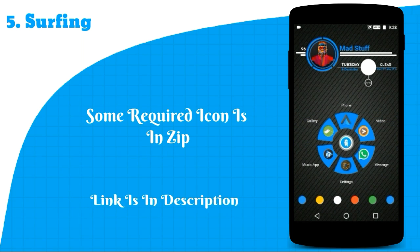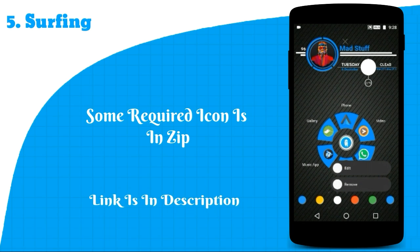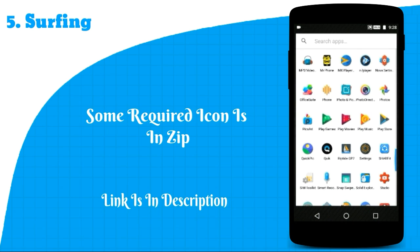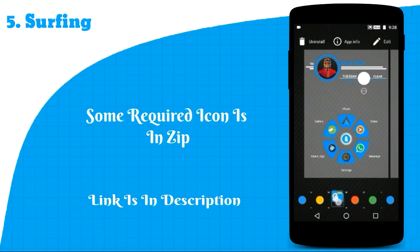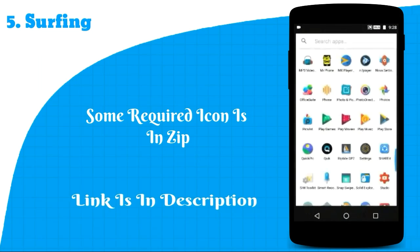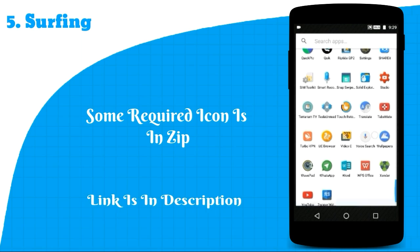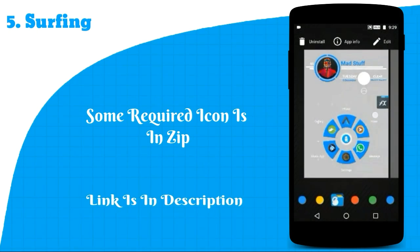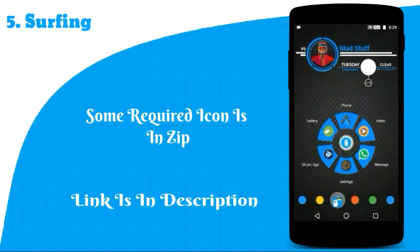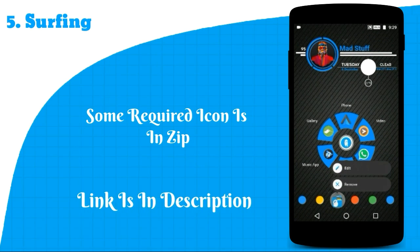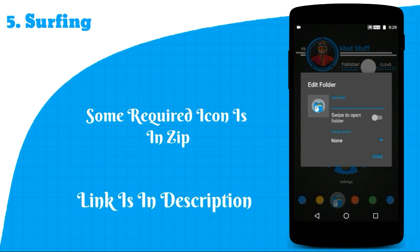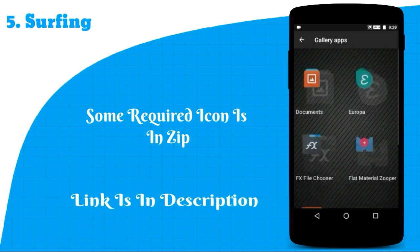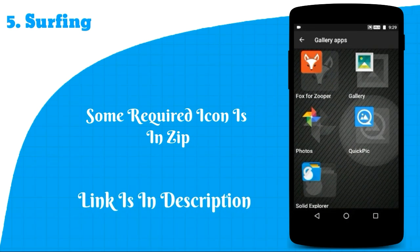It may be possible that you don't have the apps I have, so some of the apps and dock folders may get removed when you click on them. Don't worry — place a few useful app folders in the dock area. Long press the folder and edit it using the gallery app such as Quick Pick. I have provided all color icons in the zip for you guys.